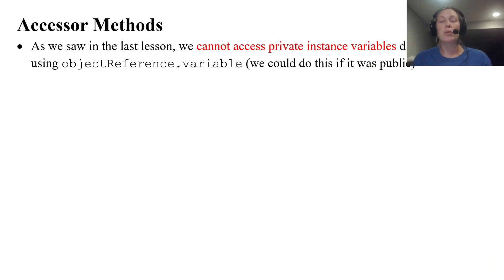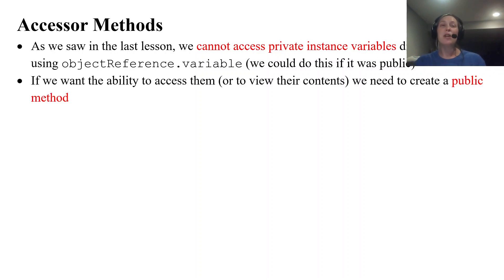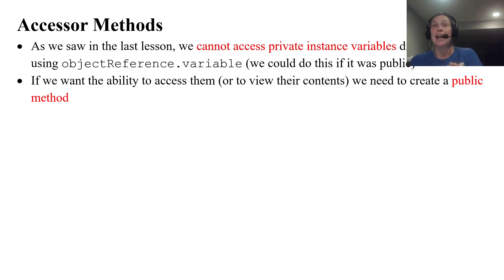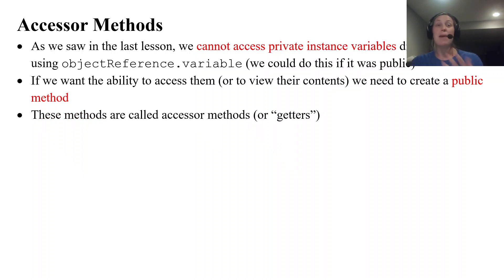Where we left off in the last lesson, we talked about how we have private instance variables, and that makes it so that we cannot access them directly. We talked about using that object reference dot variable name — the dot notation and then the actual name of your instance variable. If we had public instance variables, that would be okay to do, but we don't. If we want to have the ability to access them — in other words, just to view their contents — we need to create a public method that allows us to do this. The instance variables are private so we cannot see them directly, but we can see them through a public method. These methods are called accessor methods, or shorthand: getters.